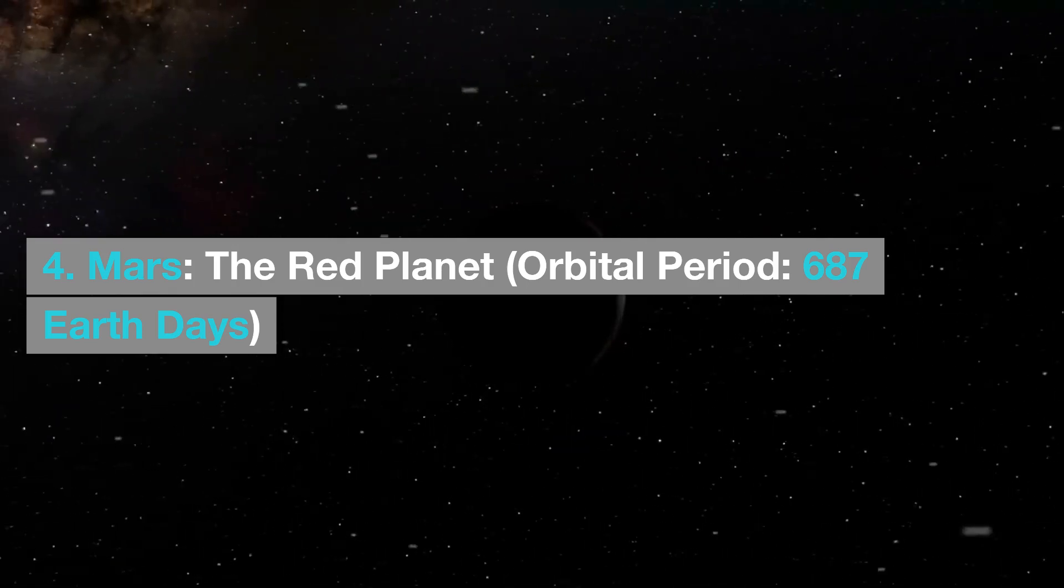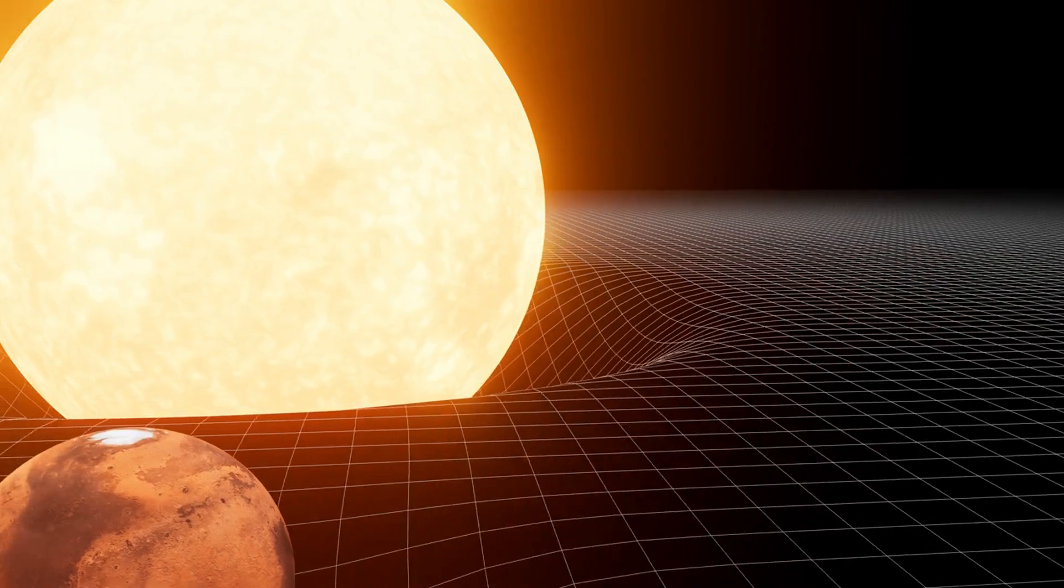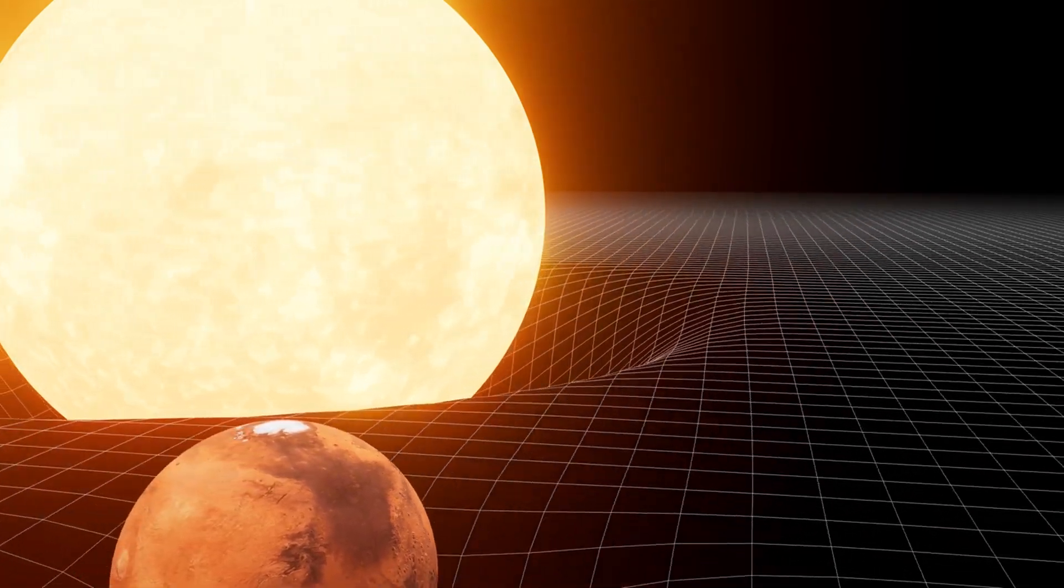Mars, the red planet, orbital period 687 Earth days. Mars has an orbital period of roughly 687 Earth days.